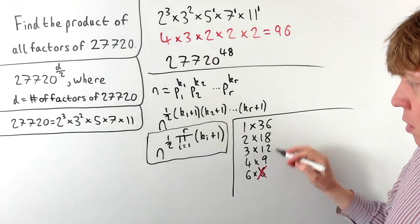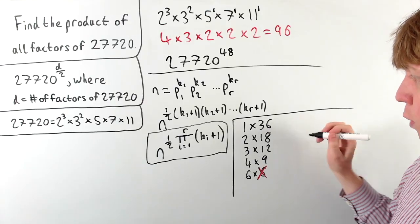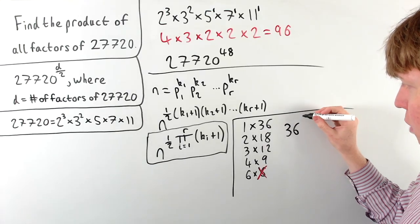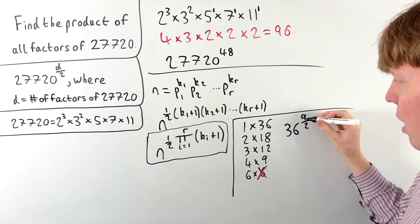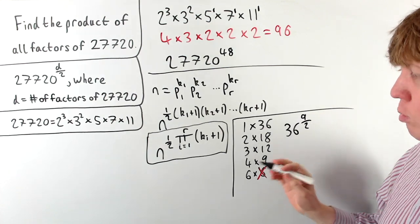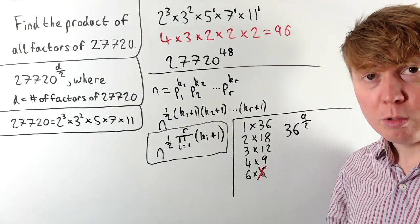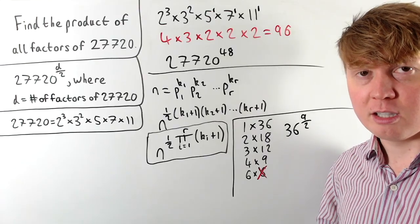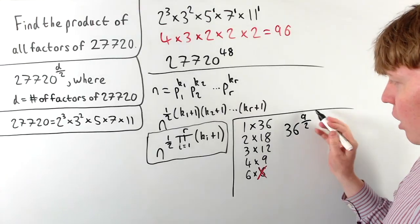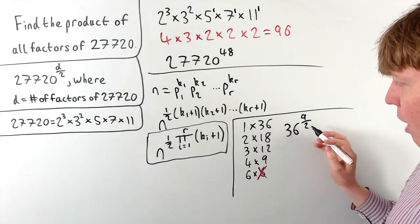So our answer here, the product of all of the factors of 36, would be 36 raised to the power of 9 over 2. And this feels a bit weird having our answer, which we know is going to be an integer, with a non-integer power. But I like how it's really neat that we have the non-integer power where it's to the power of a half.